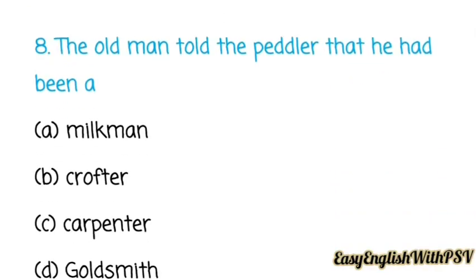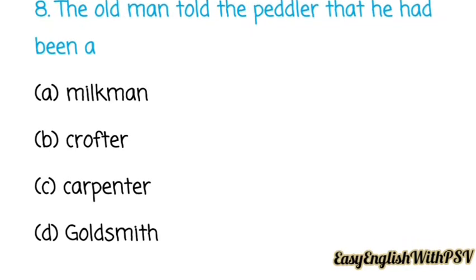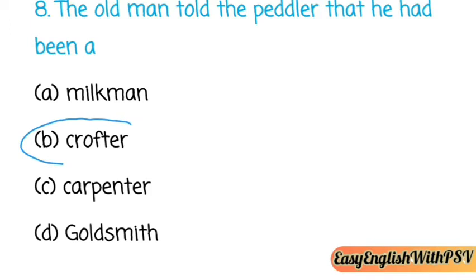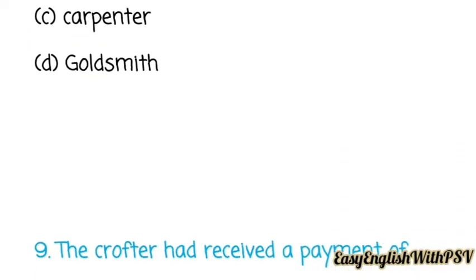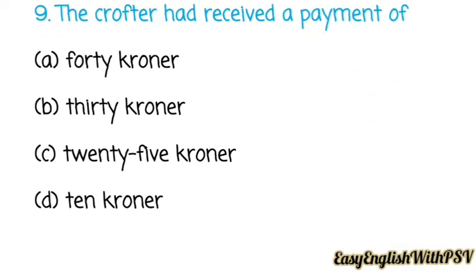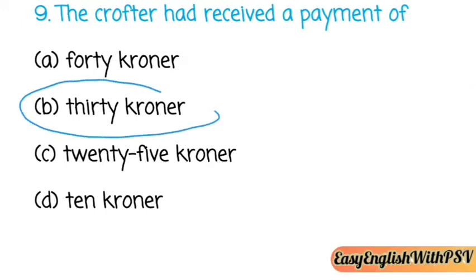Question number eight: The old man told the peddler that he had been a crofter when he was young. Question number nine: The crofter had received a payment of how many kroners — 40, 30, 25, or 10? The answer is 30 kroners, which were ultimately stolen by the peddler.